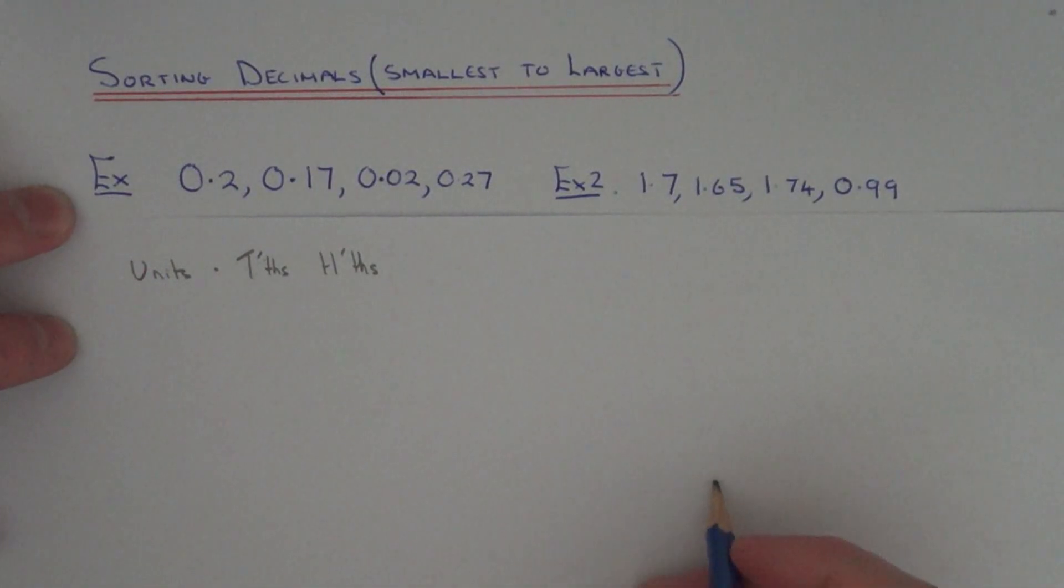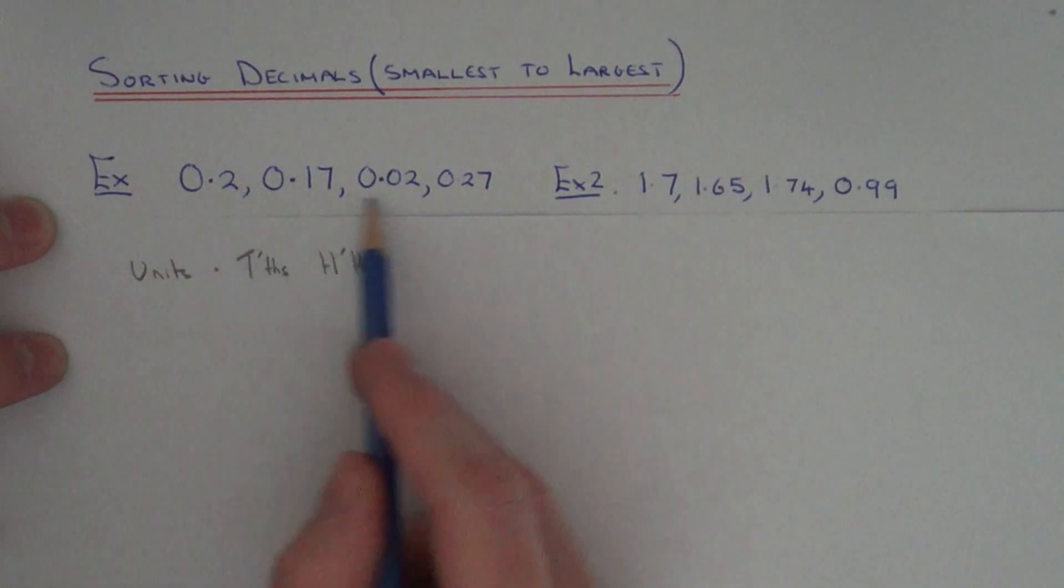Today I'm going to show you how to order a set of decimals from smallest to biggest. First of all, write your decimals in your list into columns.